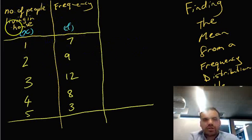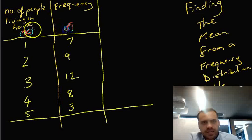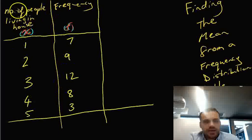Now let's look at a question that you might get. You're going to get an X column and an F column. F for frequency, and the X, that's the thing that we're talking about. Now with this particular question, we're looking at number of people living in a house.